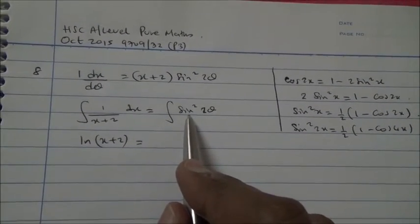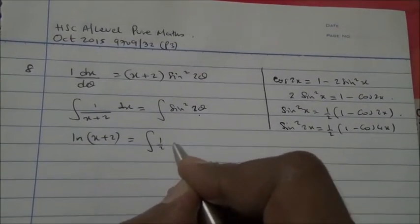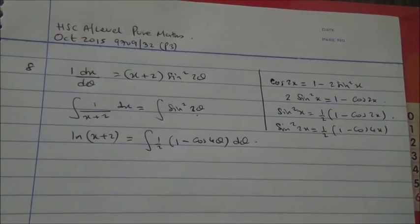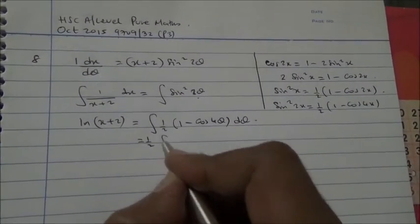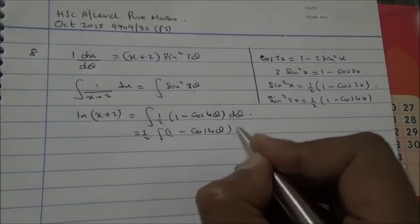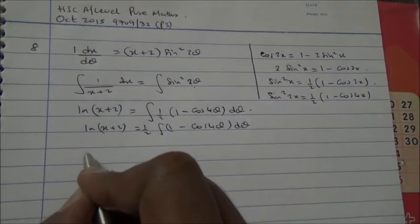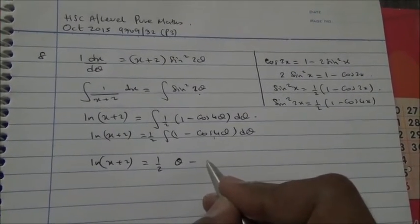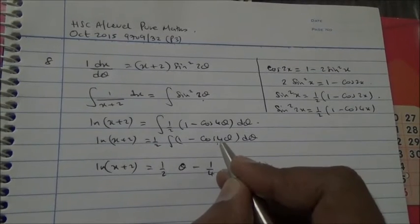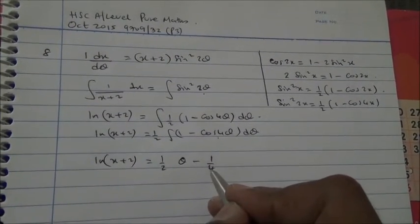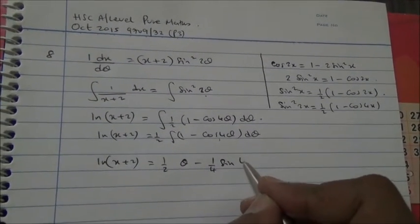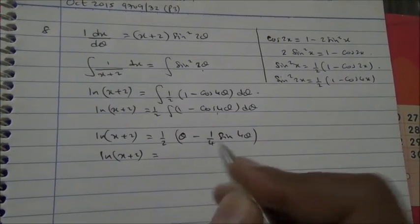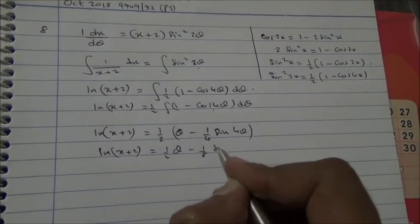So we're saying that the integral of sine squared 2 theta is the same as the integral of half into 1 minus cos of 4 theta with respect to theta. We're going to put the half outside. We have integral of 1 minus cos of 4 theta, d theta. That's going to become half. You integrate 1, you get theta. You integrate this, you're going to get minus 1 quarter because you have to differentiate 4 theta, it becomes 4 and you divide by 4. And you're going to get sine. When you integrate cos, you get sine. Sine of 4 theta in brackets.